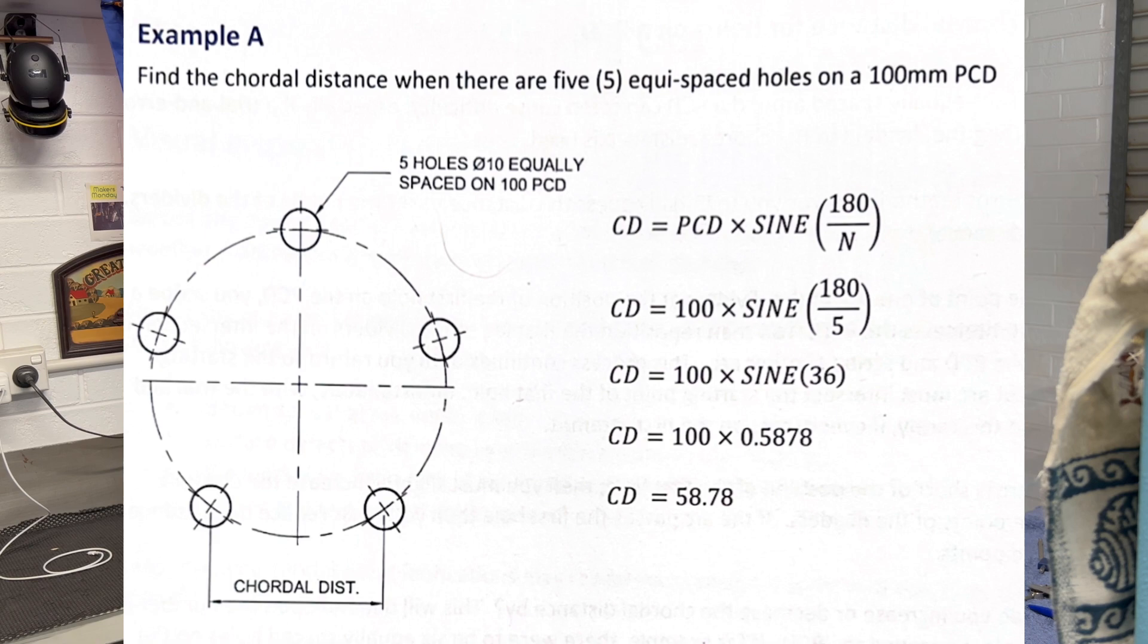So let's have a look at it. I'm going to flick up the math on the screen for you so you can have a look. And it's quite easy. The mathematical formula for this: chordal distance equals PCD times sine, then in brackets, 180 over the number of holes. So I'm going to bring you over here now to have a look at this and we'll work some out together.